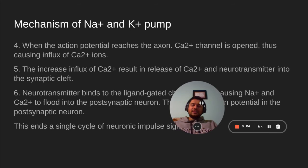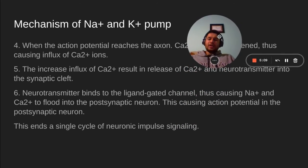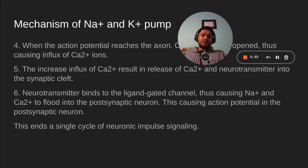The action potential reaches the axon terminal. Calcium 2+ channels are opened, causing an influx of calcium ions, and this increased influx causes the release of more calcium and neurotransmitters into the synaptic cleft. Step six: the neurotransmitter binds to the ligand-gated channel, causing sodium and calcium to flood into the post-synaptic neuron, triggering an action potential there. This constitutes an entire cycle — a single cycle of neuronal impulse signaling.